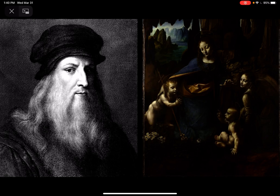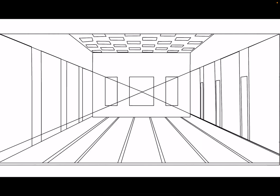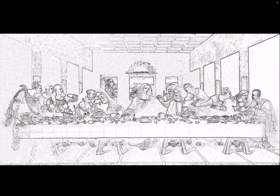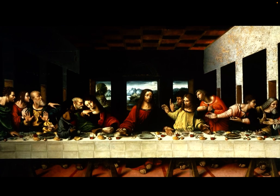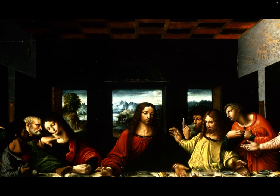In 1482, da Vinci became a professional painter in Milan and completed the Virgin of the Rock. For the Last Supper, da Vinci used a new Renaissance technique called perspective, that brought new realism to paintings by making distant objects smaller than those closest to the viewer. Da Vinci draws the viewer's eye to the space above Jesus, which gives the illusion of great space and depth.